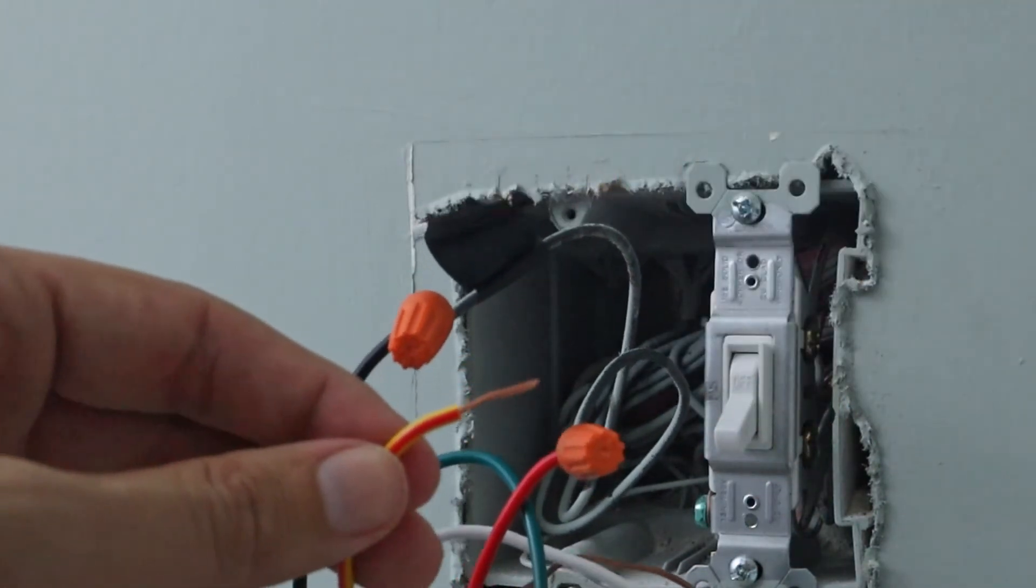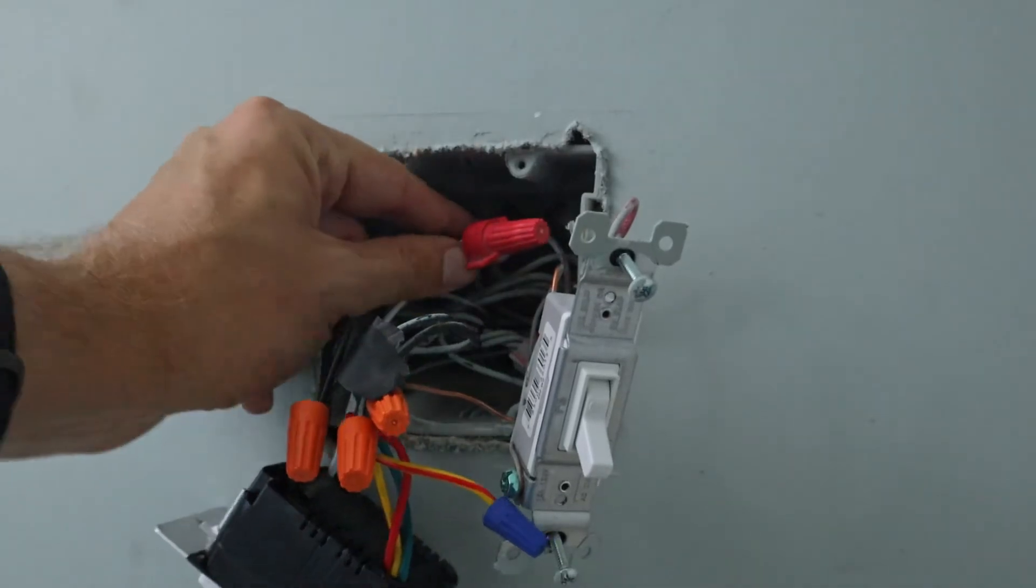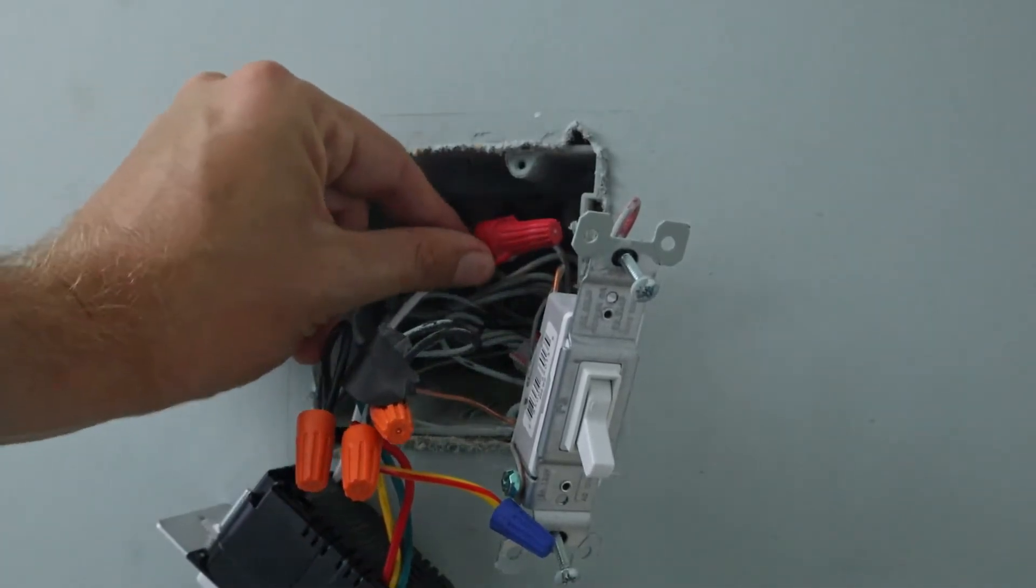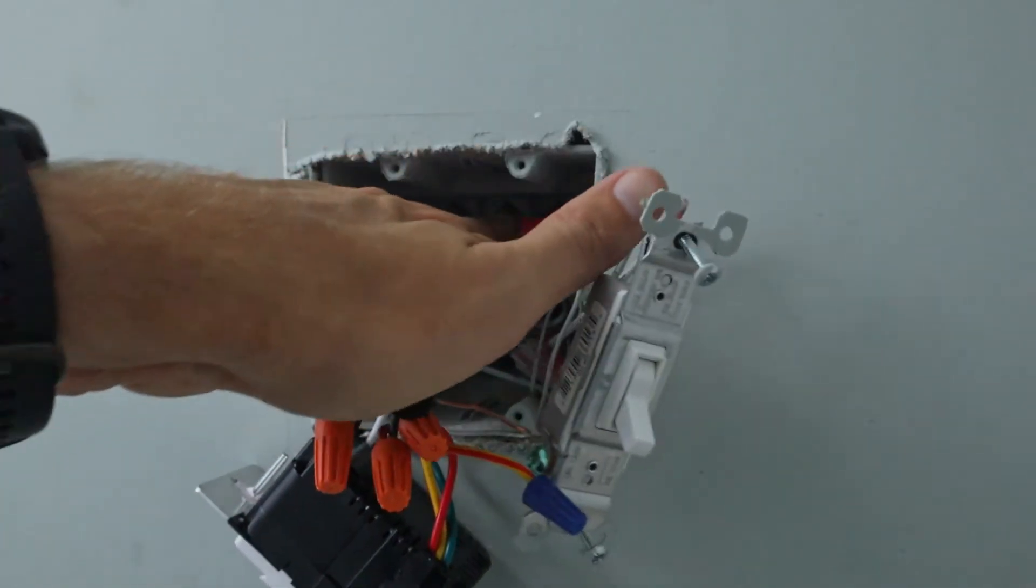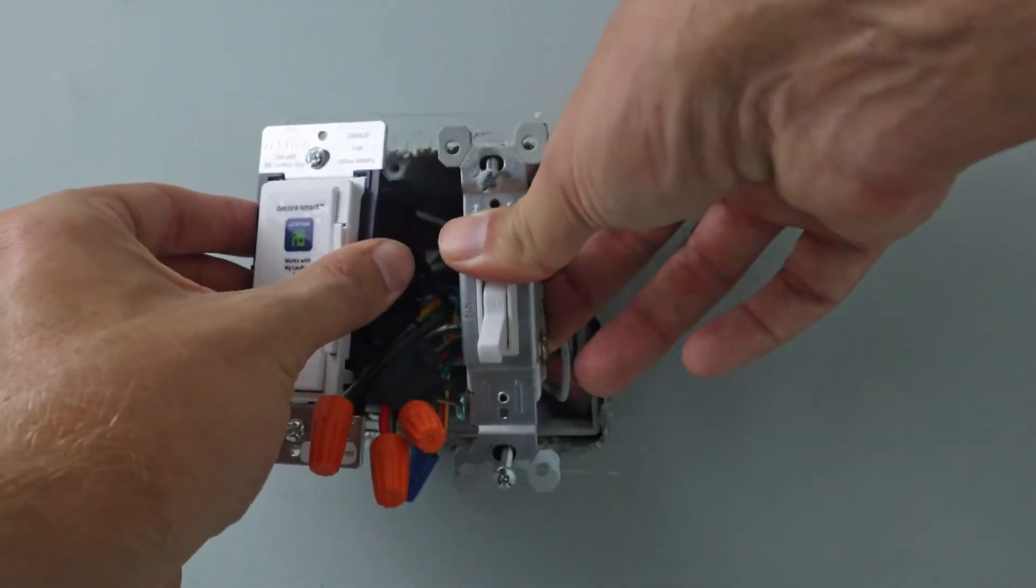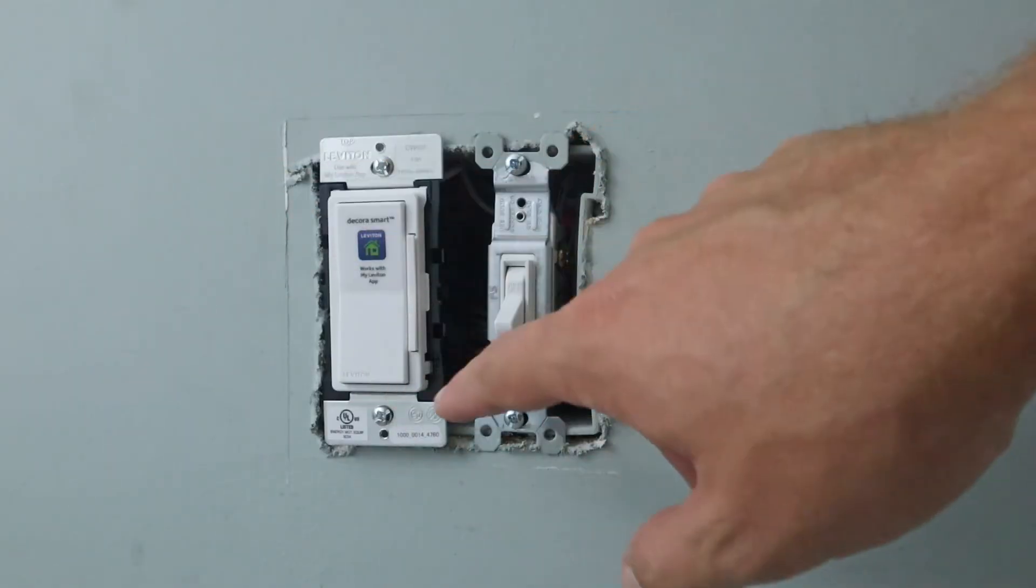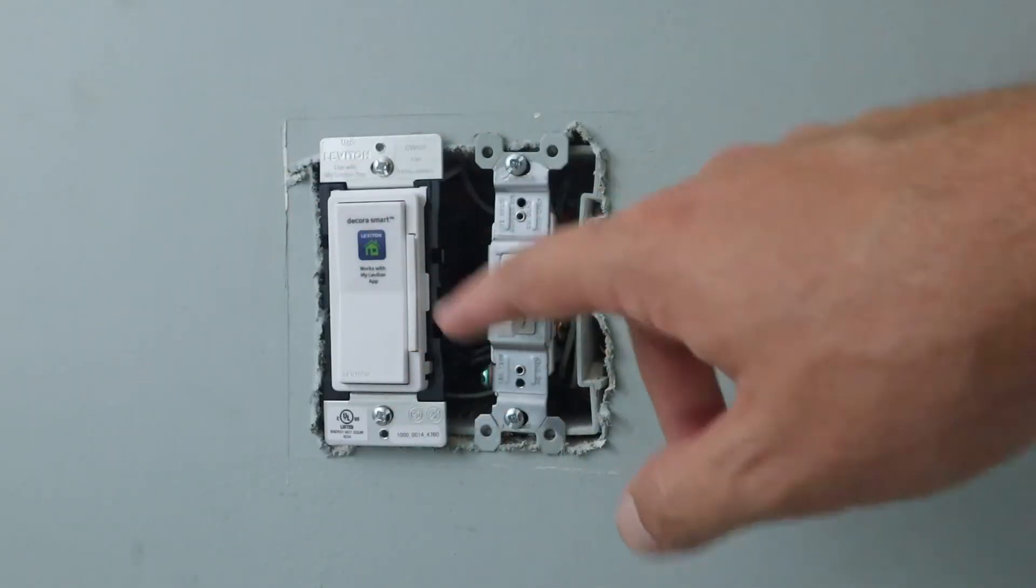But since we don't have a traveler wire in this one, we'll just go ahead and take that off and put a wire nut on top of it. All right, so now everything is connected so we can put everything back in its place and screw these light switches back into the box. All right, so now all this is connected and screwed back in. Let's go ahead and turn on the power and test it out.